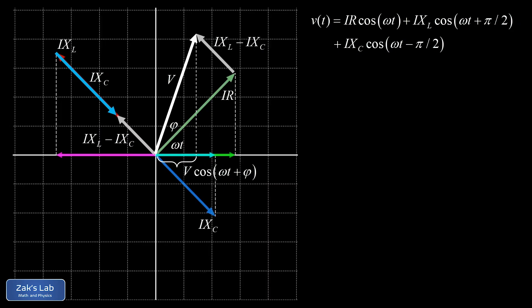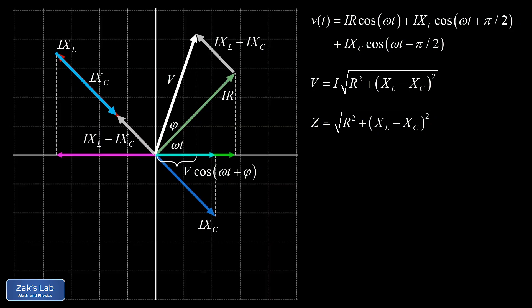The actual sinusoidal voltage function is the horizontal component of that phasor: V·cos(ωt + φ). Using the Pythagorean theorem, the magnitude of the net voltage phasor is I times the square root of R² + (X_L − X_C)². We define that square root as the total impedance Z, giving us the Ohm's law style relation V = IZ, where Z acts as the total effective resistance.